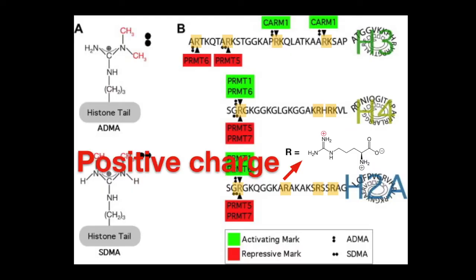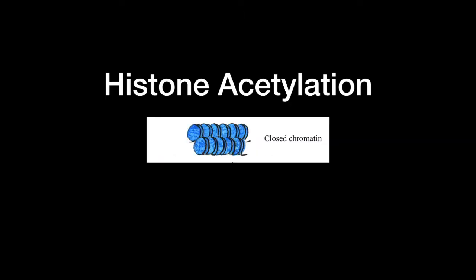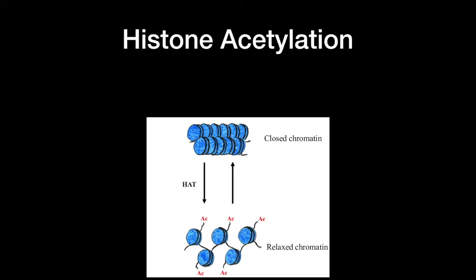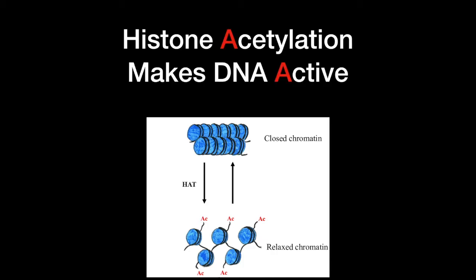Histone acetylation removes the positive charges on the histones. By removing the positive charge, DNA coils relax and transcription increases. Remember, histone acetylation makes DNA active.